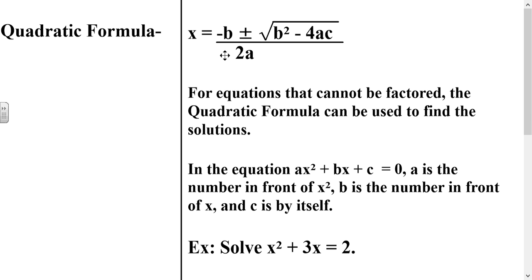So if you think of any equation that is in the form ax squared plus bx plus c equals 0: a is the coefficient of x squared, b is the coefficient of x, and c is the number that is by itself, or the constant.